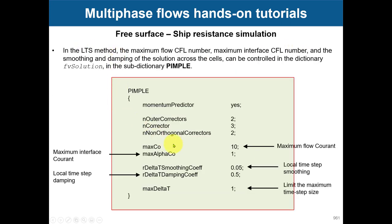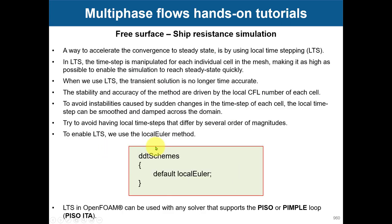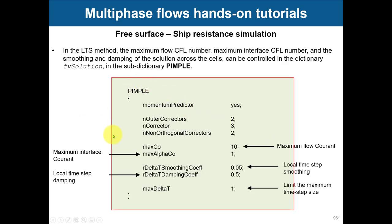To enable LTS, first set 'ddtSchemes default localEuler' — you can keep the rest of the definition from the unsteady case. Then in the PIMPLE dictionary you introduce parameters to control the local time stepping, including maximum Courant for the fluid and for the interface alpha.